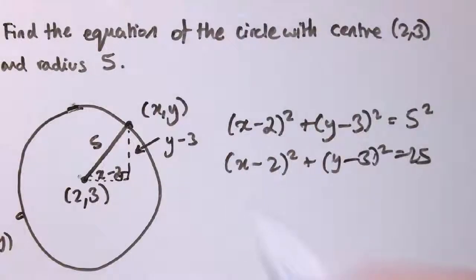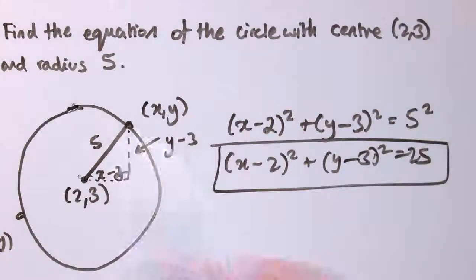And that is then the equation of this circle. All the different values of x and y would satisfy this equation if and only if they lie on this circle.